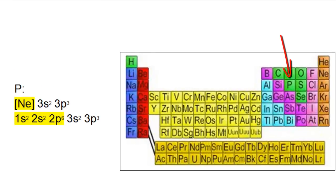Another example is phosphorus. The noble gas electron configuration for phosphorus is neon in brackets, followed by 3s2, 3p3.